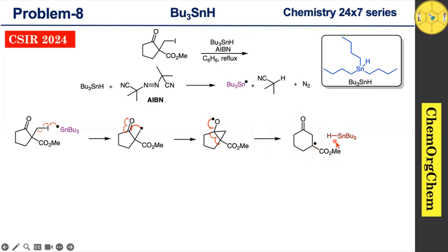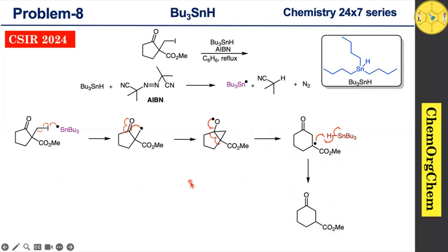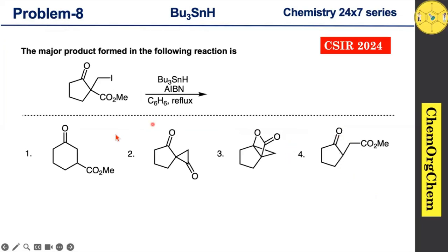Ring expansion takes place to produce a new carbon-centered radical. This carbon-centered radical quickly abstracts a proton from tributyltin hydride, resulting in the formation of a ring-expanded ketone as the product. This sequence of reactions is known as the Dowd-Beckwith ring expansion reaction.